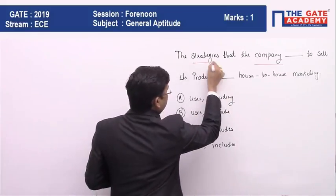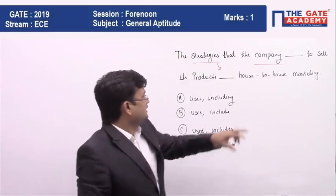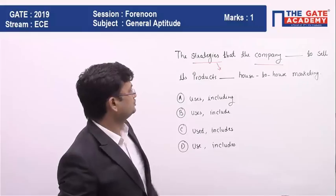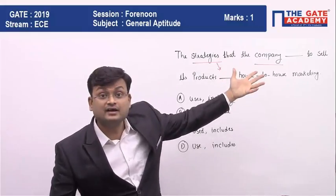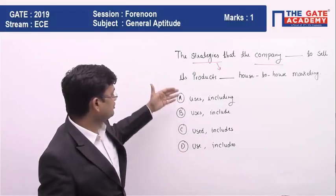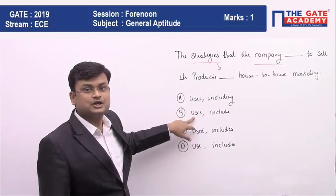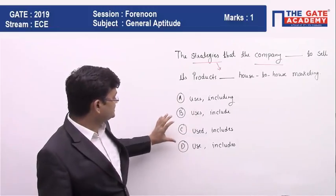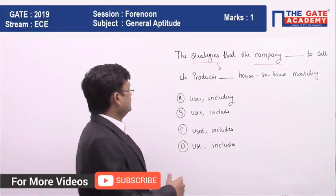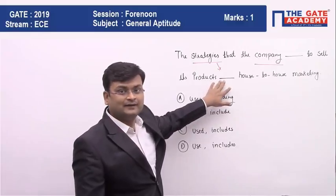If you look carefully, 'company' is a singular noun. Therefore, we have to use a singular verb. The singular verb here is 'uses.' So options C and D are ruled out, because the correct singular verb to use here is 'uses.'